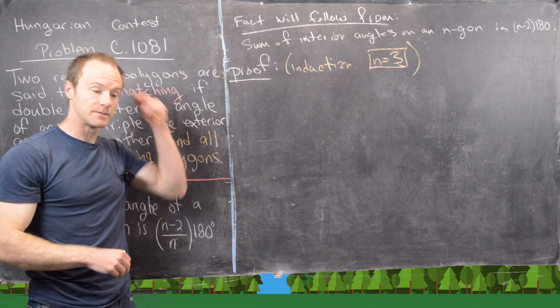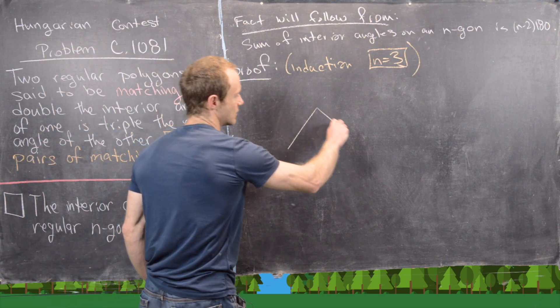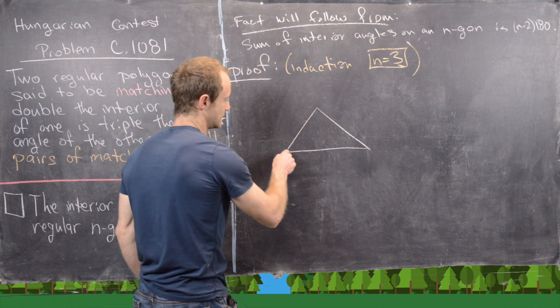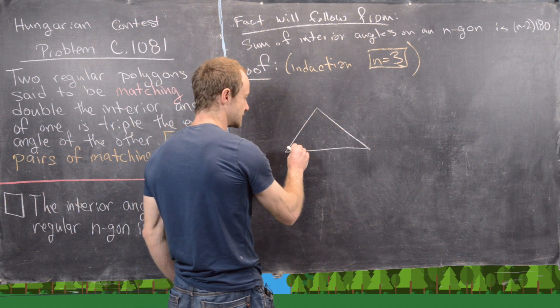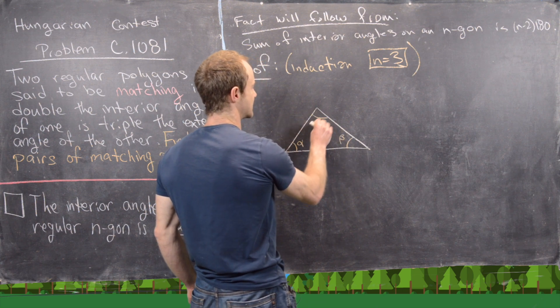So let's say we've got this triangle right here. And let's go ahead and name the angles. So maybe we'll name this one alpha, we'll name this one beta, and we'll name this one gamma.